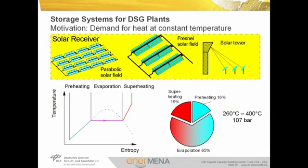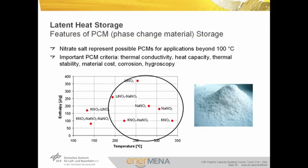The motivation for the development of latent heat storage systems is a demand for a storage system able to store energy at a constant temperature. If water is used as heat transfer fluid in the absorbers, a large fraction of the energy is transferred at constant temperature during the evaporation process. The storage system must then be able to store energy at constant temperature during the condensation process. In a typical direct steam generation process, about 65% of the energy is transferred by wet steam during condensation or evaporation, and the storage system must be able to store this energy at a constant temperature.